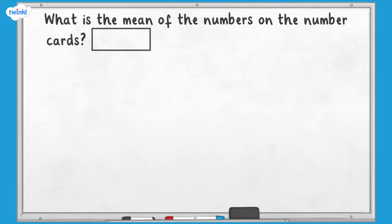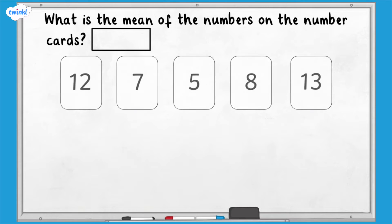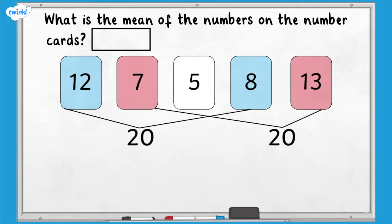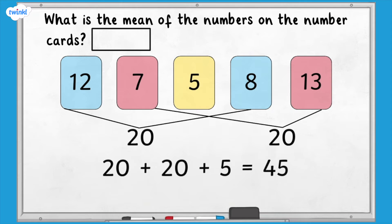For example, let's find the mean of the numbers on these number cards. First we need to find the total. To do this you could group together 12 and 8 to make 20, and 13 and 7 to make another 20. Then add together 20 and 20 and 5 to make a total of 45.